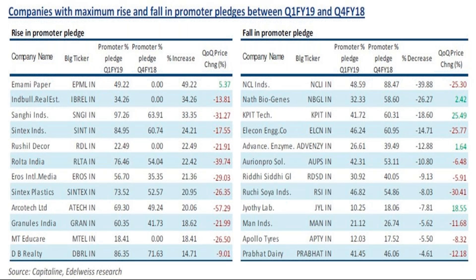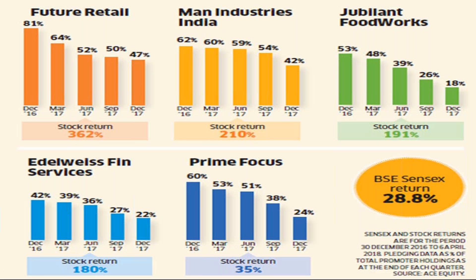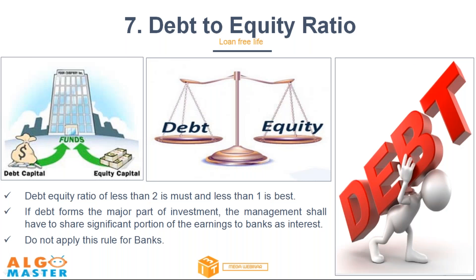There is a minimum percentage of shares a company must release to the general public — around 10% as set by the exchange. Whenever promoter pledging falls, performance improves. The next most critical parameter is debt — debt is what destroys a family, debt is what destroys a company. That is what destroyed Orchid, Suzlon, Kingfisher, and many other companies. I will show how to find all this pledging information in practical examples.